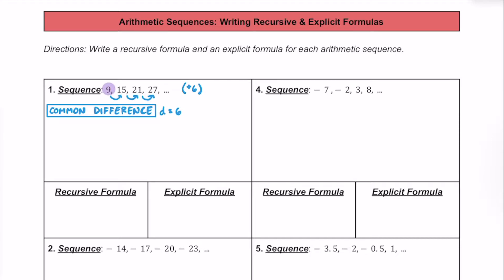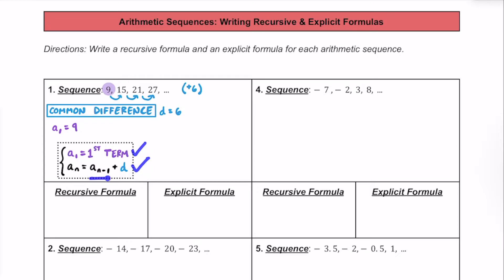We also want to go ahead and identify the first number in the sequence. We know that a sub 1 is equal to 9, or the first number in the sequence. At this point, I think we have all the information that we need to go ahead and write our recursive formula. We want to start by always knowing the first term of the sequence, or a sub 1, and we know that a sub n, or any number in the pattern, is essentially going to be the number previous in the pattern, or right before it, plus that common difference.